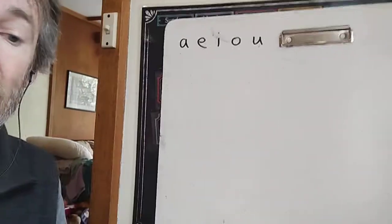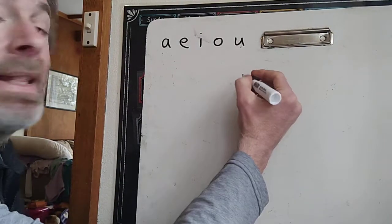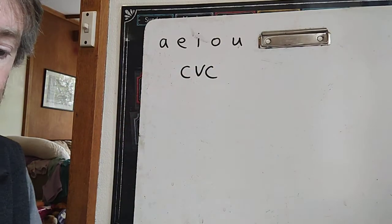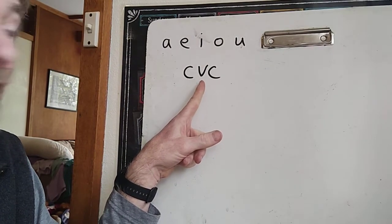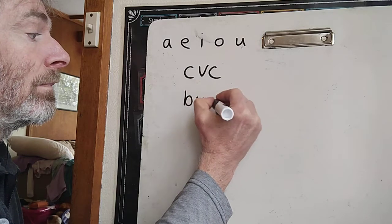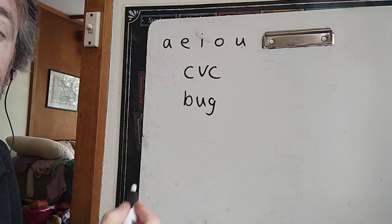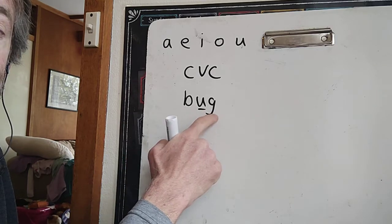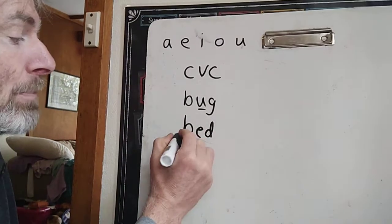Up until this time, we have mostly been looking at words that are spelled in this pattern. The short version of it is C, V, C — that means they have a consonant, a vowel, and a consonant. So if we put the word 'bug' here, what's the vowel in bug? The vowel is the U. B is a consonant and G is a consonant.